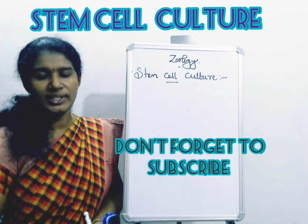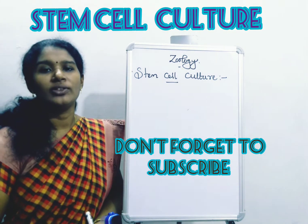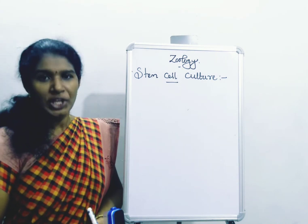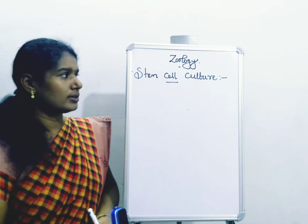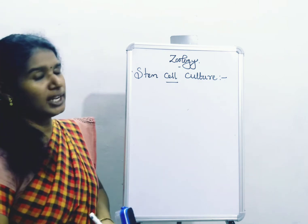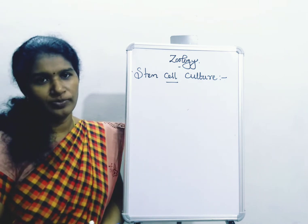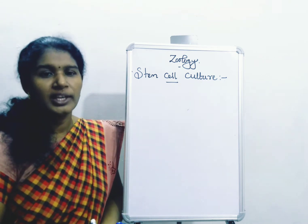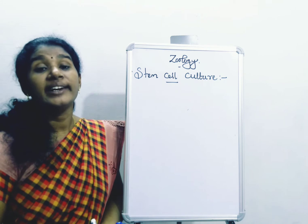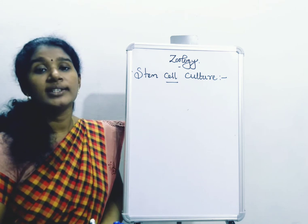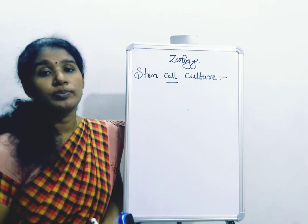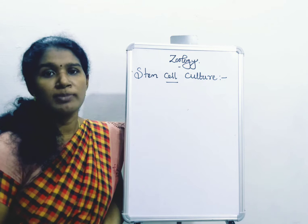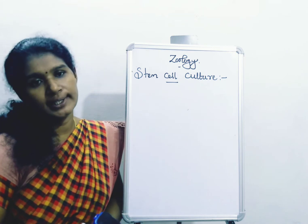Hi dear students, welcome to Divya Zoo class. Today our topic is stem cell culture. A stem cell is an unspecialized or undifferentiated mass of cells.